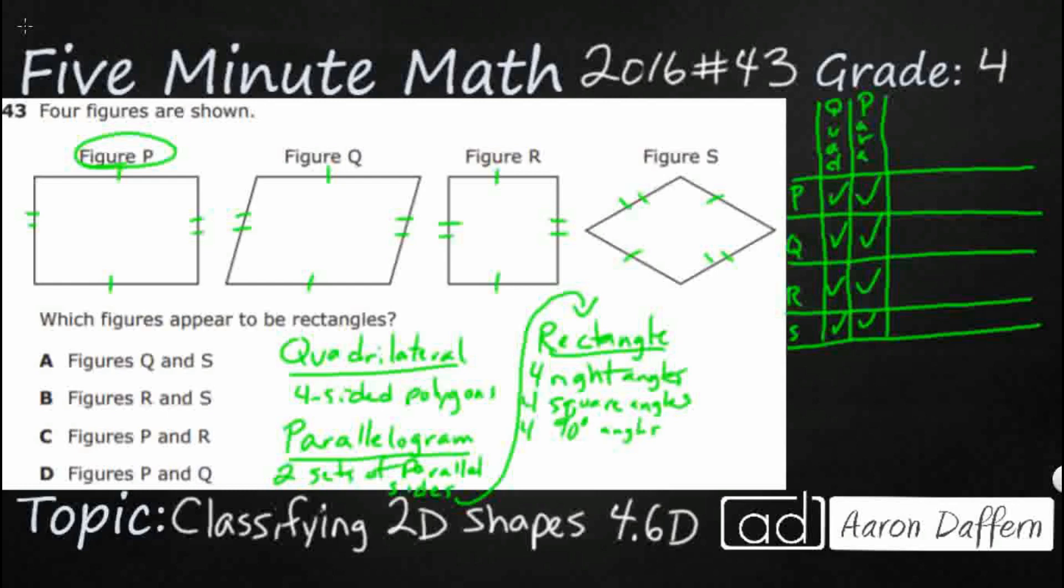So let's see if we can call that rectangle right here. Well, obviously my figure P is good because it is a rectangle. It's got four square corners, so we are good to go there. Figure Q doesn't have any right angles, so I'm going to just leave that blank. It's got two obtuse right here and two acute. So we're just going to call that a parallelogram and leave it there.